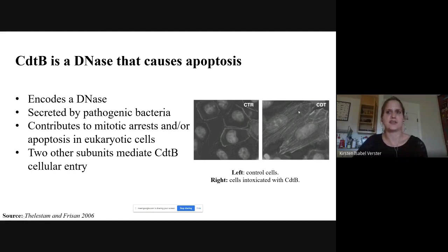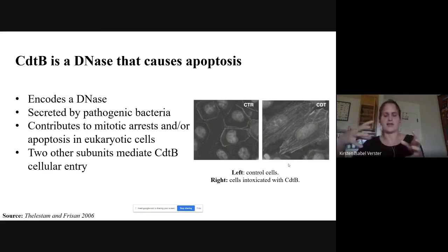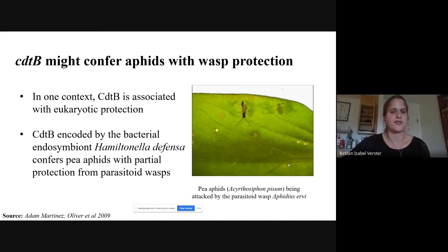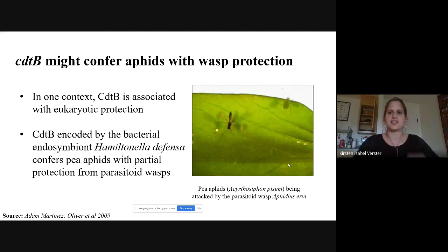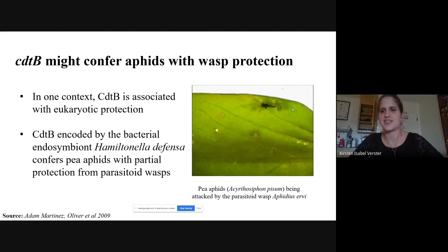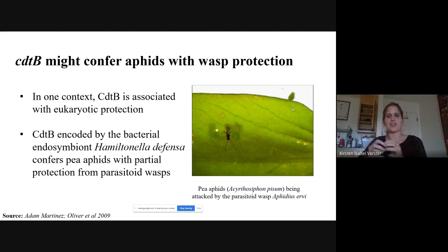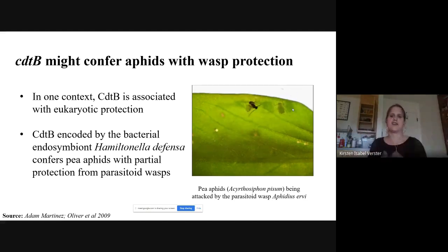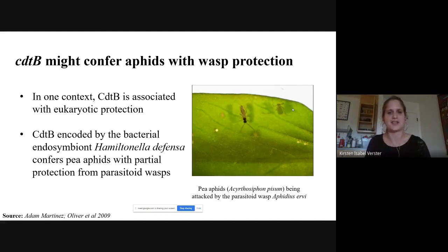However, there is one interesting example where CDT-B is known to confer a protective advantage to eukaryotes — in aphids. Aphids are attacked by parasitoid wasps that lay an egg inside them; the larva then eats the aphid alive until an adult wasp emerges from the mummified husk. But some aphids have beneficial bacterial endosymbionts called Hamiltonella defensa, which secrete CDT-B, and those aphids are more likely to survive parasitoid wasp attack. I wanted to know how prevalent CDT-B was across insects.